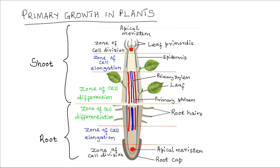There are two types of growth in plants: primary growth and secondary growth. In this section we look at primary growth. Primary growth is brought about by the activities of the apical meristems located at the tips of the shoot and root. Sometimes primary growth is also brought about by the intercalary meristem found in monocots. Primary growth produces primary tissues such as the epidermis, primary xylem, and primary phloem.